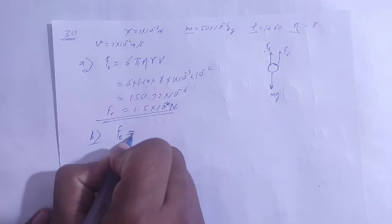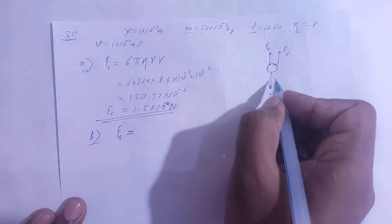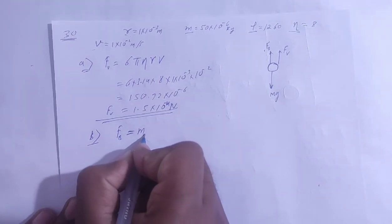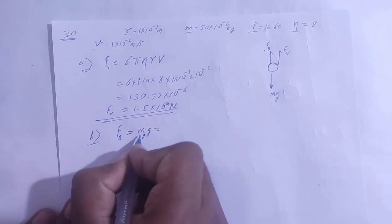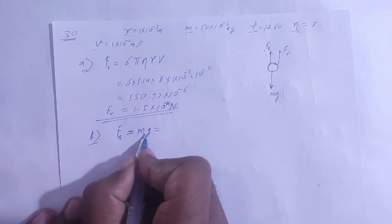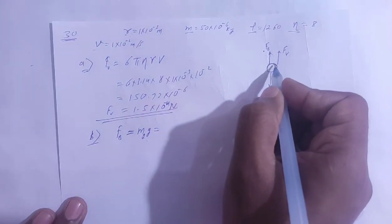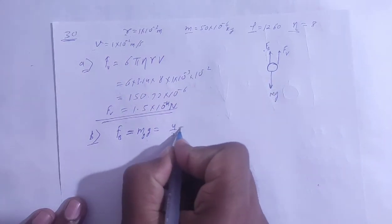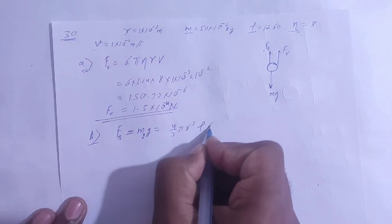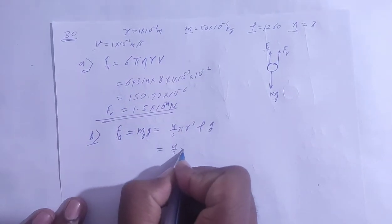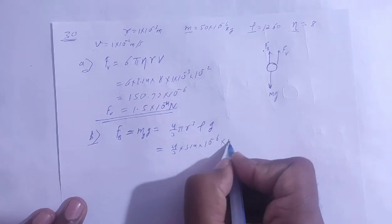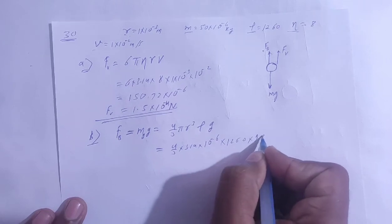The buoyant force equals the mass of displaced glycerin times g, where mass equals density times volume. The volume displaced is that of the sphere: 4/3 π r³. So buoyant force = (4/3) π r³ × ρ_glycerin × g. Substituting: (4/3) × 3.14 × (10⁻³)³ × 1260 × 9.8.